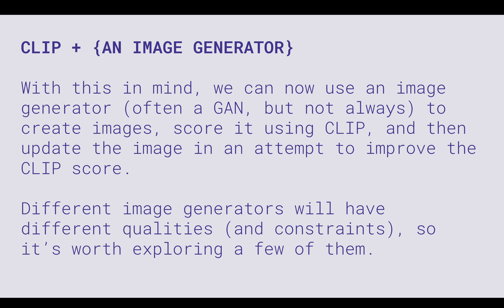We take that scoring system and attach it to a GAN. The GAN generates images, CLIP scores them, and then the GAN can improve the image based on that score. Different image generators have different qualities and constraints. The newer one people are using is guided diffusion, which tends to work better for realistic imagery, but is kind of slow and takes a lot of iterations. VQGAN was the popular one before — it generates pretty nice images but has a certain look to it.